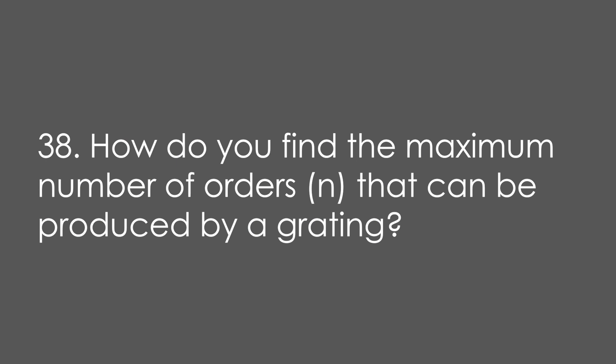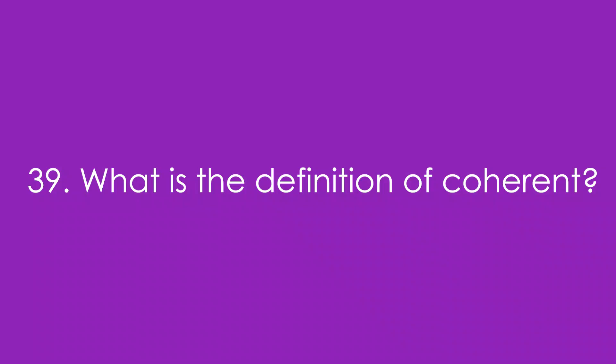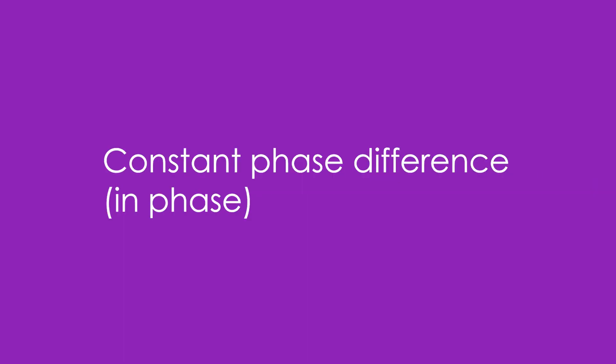38. How do you find the maximum number of orders n that can be produced by a diffraction grating? You make theta 90 degrees so sine theta equals one, meaning n lambda equals d, then round down to the next lowest whole number. 39. What is the definition of coherent? It's when light has a constant phase difference — really all it means is all the light is in phase.